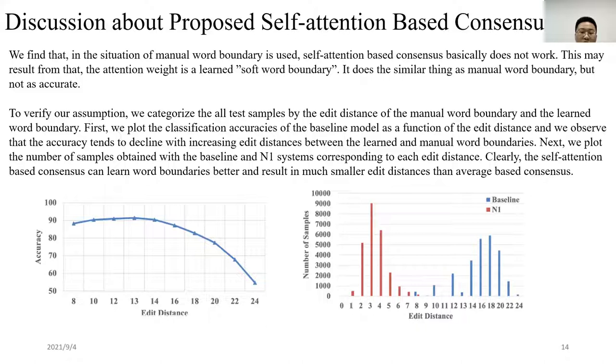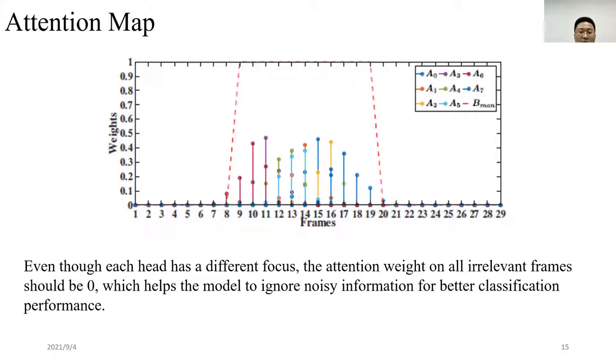To verify our assumption, we categorize all the test samples by the edit distance of manual word boundaries and the learned word boundaries. First, we plot the classification accuracy of the baseline model as a function of the edit distance and we observe that the accuracy tends to decline with the increasing edit distance between the learned and manual word boundaries. Next, we plot the number of samples obtained with baseline and N1 system corresponding to each edit distance. Clearly, the self-attention based consensus can learn word boundaries better and result in much smaller edit distance than average based consensus. The weights learned with the proposed self-attention consensus for the example are plotted here. We can find that even though each head has a different focus, the attention weights on all irrelevant frames are quite small, mostly equal to zero, which helps the model to ignore noisy information for better classification performance.